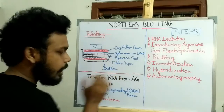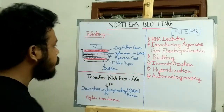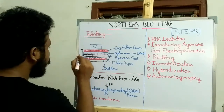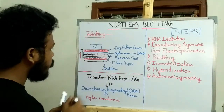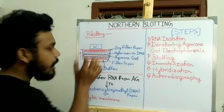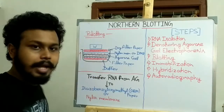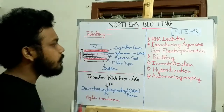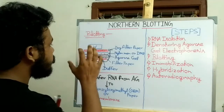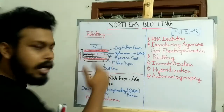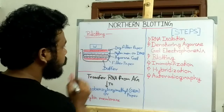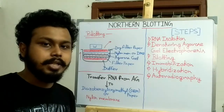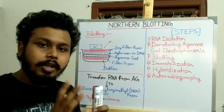For the transfer, buffer solution moves upward by capillary action, carrying the RNA molecules from the agarose gel to the nylon membrane. The RNA molecules become stuck in the nylon membrane while the buffer continues into dry filter paper. Once blotting is complete, the nylon membrane is removed and exposed to UV irradiation.